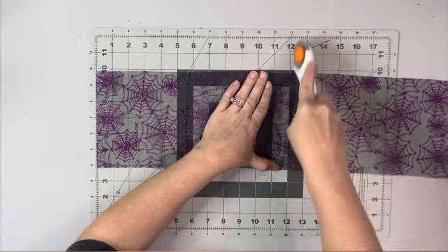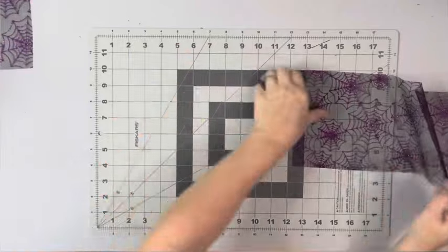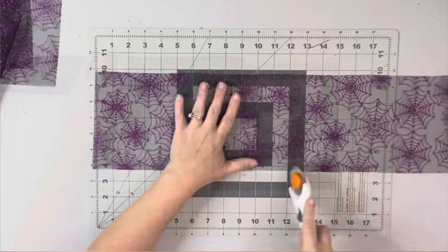Next, I took this decorative tulle also from Dollar Tree and cut it in strips of 12 inches. I used two different patterns and I needed four rolls total, so two of each pattern.